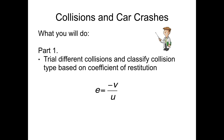For part one, you will be looking at different collision types and classifying them as elastic, inelastic or partially inelastic, based off the coefficient of restitution you calculate — the value e, which is equal to the negative of the final velocity over the initial velocity of a car in a collision. That will give you a value between zero and one which will tell you what collision type you have.